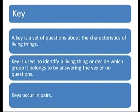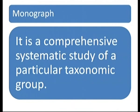A key is a set of questions about the characteristics of living things. It is used to identify a living organism or to decide which group it belongs to, by answering yes or no questions. The key is also used to discover and classify new species. Keys occur in pairs — they occur in couplets.